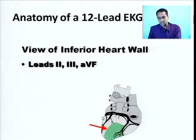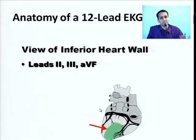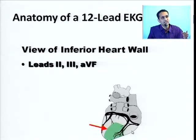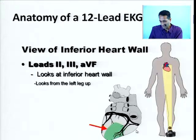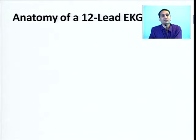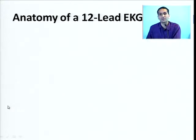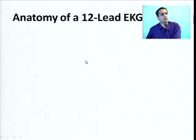The inferior wall is best represented by leads with an inferior axis: lead 2 (axis 60°), lead 3 (axis 110°), and lead AVF (axis 90°). If you have changes only in 2, 3, AVF, your diagnosis is inferior wall ischemia or infarction. If there are only T wave inversion and ST depressions, you say inferior wall ischemia; if there is ST segment elevation in the inferior leads (2, 3, AVF), you say inferior wall myocardial infarction.